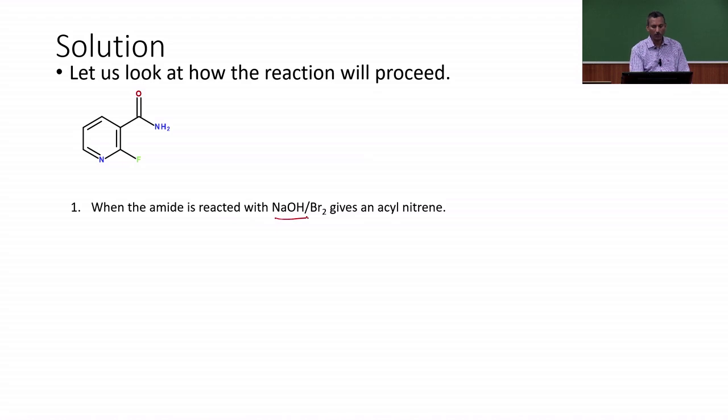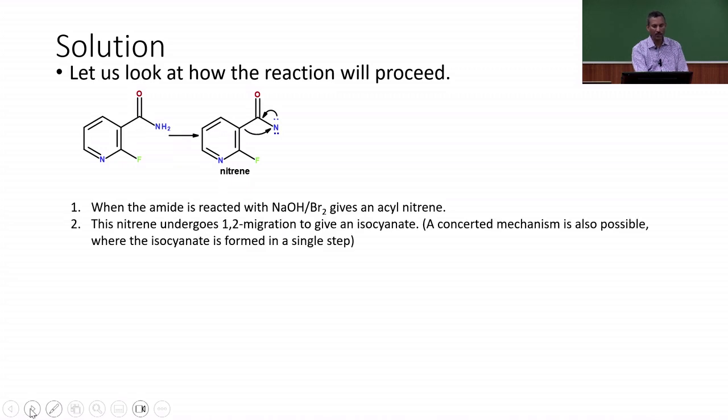When an amide is treated with sodium hydroxide and bromine, it actually gives acyl nitrene. Once the acyl nitrene is formed, this is the intermediate in this particular case. Once acyl nitrene is formed, this undergoes 1,2 migration to give the isocyanate, similar to the previous case which is the Curtius rearrangement.